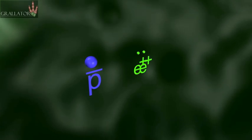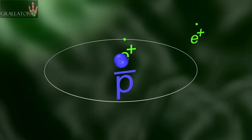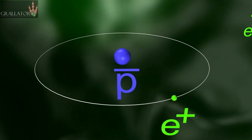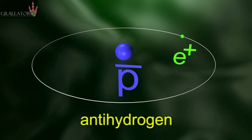Two positrons scatter in the field of the antiproton and produce the antihydrogen atom. So that's it, antihydrogen: one antiproton with a negative charge, one antielectron or positron with a positive charge.